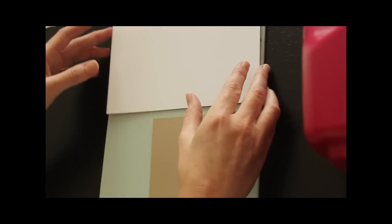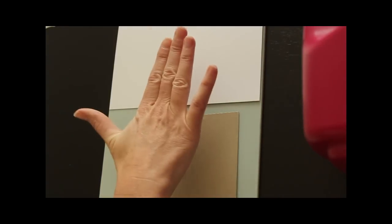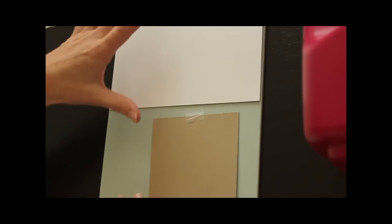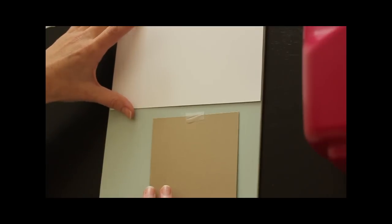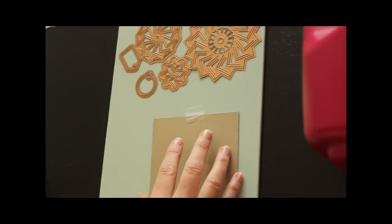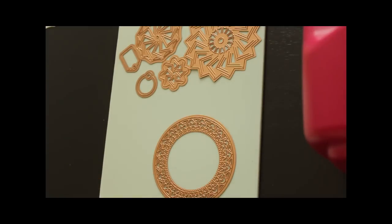Then you just place the paper over it, put the cutting plate on top of that and run it through, and then emboss it by taking the cutting plate off, adding your tan mat and the embossing plate. Once that is done your pieces will look like this.